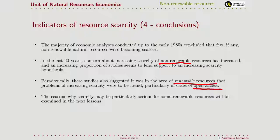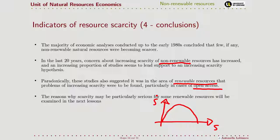We will see this in more detail when we speak in the last lesson about renewable resources. The problem is linked to the fact that for many renewable resources, the variation in stock depends on the stock itself. The more a resource becomes exhausted, the smaller its natural capacity to regenerate. So as we move toward scarcity, the stock goes down more and more quickly. When we approach a low value of stock, it declines even faster. We call this the tragedy of the commons.